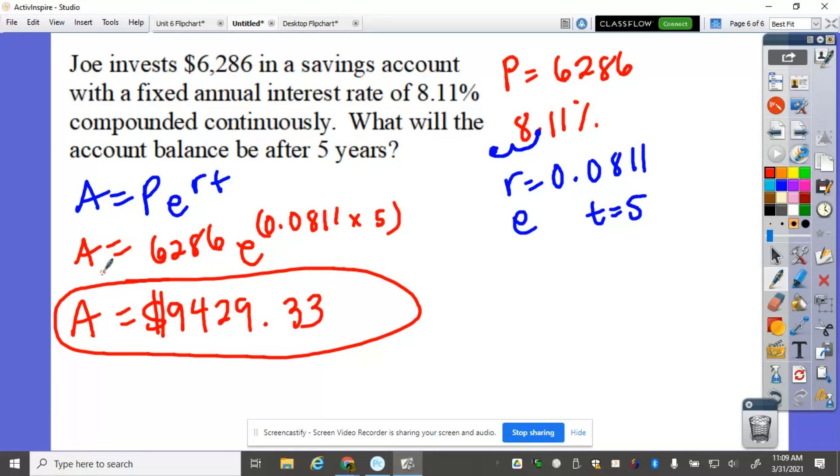And that's how you use compounded continuously, or applying the Euler's number, which is E. Again, it was E, 2.71828, kaboom.